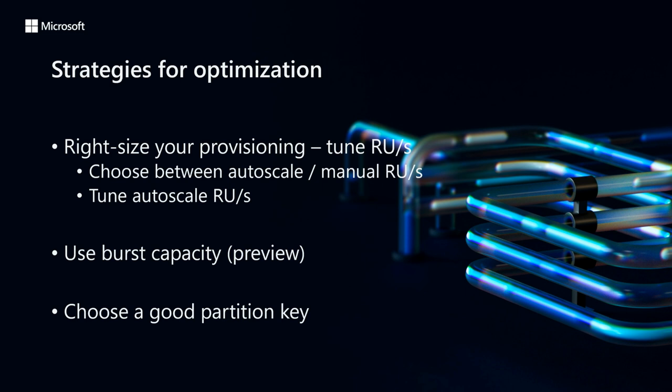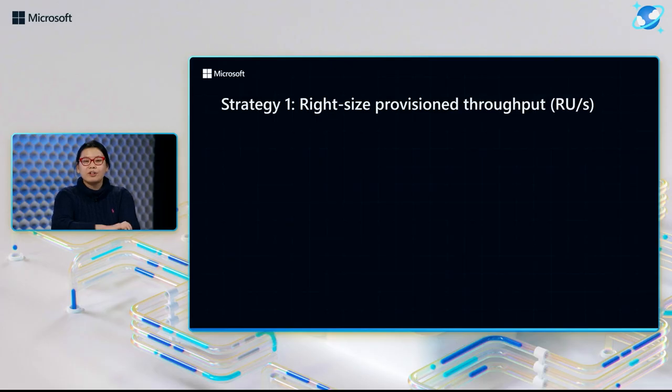The three strategies we're going to talk about today are: one, how you can right-size your RUs by tuning your provisioning. You'll learn about how you can choose between autoscale and manual throughput to pick the one that's best for lower cost. We'll talk about how you can leverage a new preview feature called burst capacity, which makes it easier for you to consume the RUs you already have, and it's a completely free feature. And finally, we'll talk about the importance of choosing a good partition key and how that can impact your cost and performance.